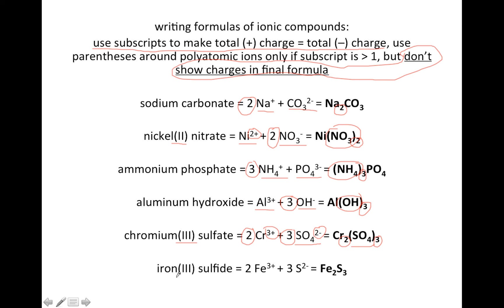Next example, very similar. Iron(III) sulfide. Iron has a plus 3 charge. Sulfide is minus 2, so to get those to balance out, we need two Fe3+ and three S2-. You'll have a total of plus 6 and minus 6. Then we take the number of ions, and we make those the subscripts. As usual, we do not show charges in our final answer. That's it for this video. Good luck.